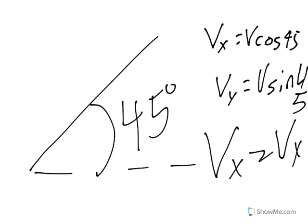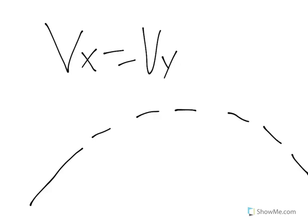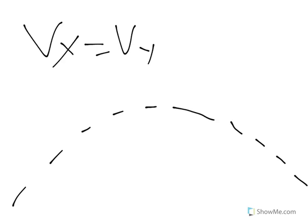So if vx equals vy, what we have is the perfect balance of x and y. And it can get up to a decently high point, not as high as 60, but higher than 30.